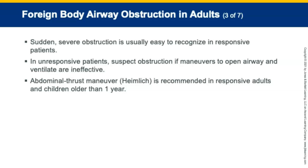For unresponsive patients, suspect airway obstruction if maneuvers to open the airway and ventilate are ineffective. Use the abdominal thrust maneuver—the Heimlich maneuver—for responsive adults and children older than one year, as it creates an artificial cough. If the patient with a severe airway obstruction becomes unresponsive, perform chest compressions.